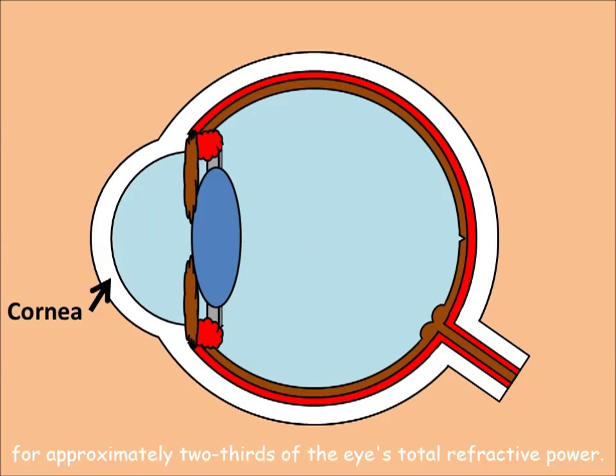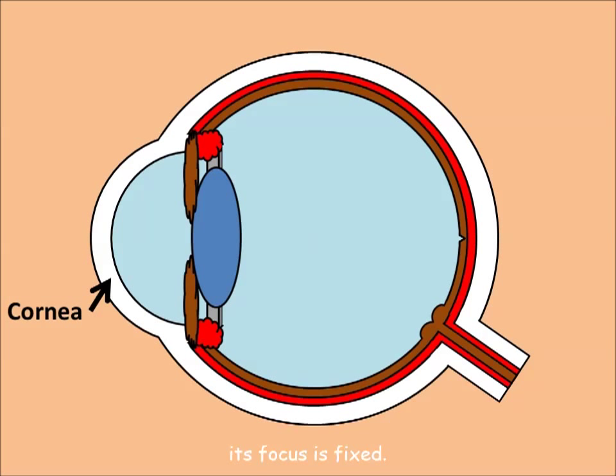The cornea is the transparent front part of the eye that accounts for approximately two-thirds of the eye's total refractive power. While the cornea contributes most of the eye's focusing power, its focus is fixed.